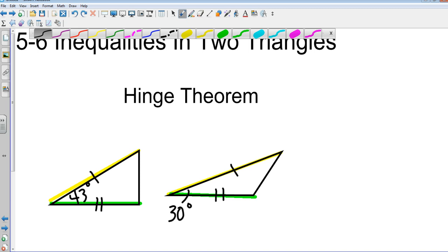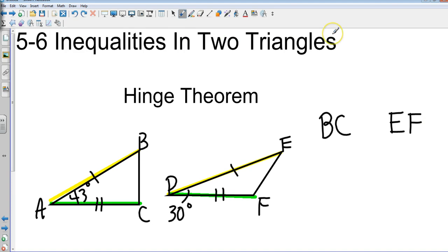But I see that that angle in between them is not the same. That tells me something about the opposite sides of those triangles. Let's say this was ABC and this is DEF. Based on what we have learned so far, tell me the relationship between BC and EF based upon the hinge theorem.